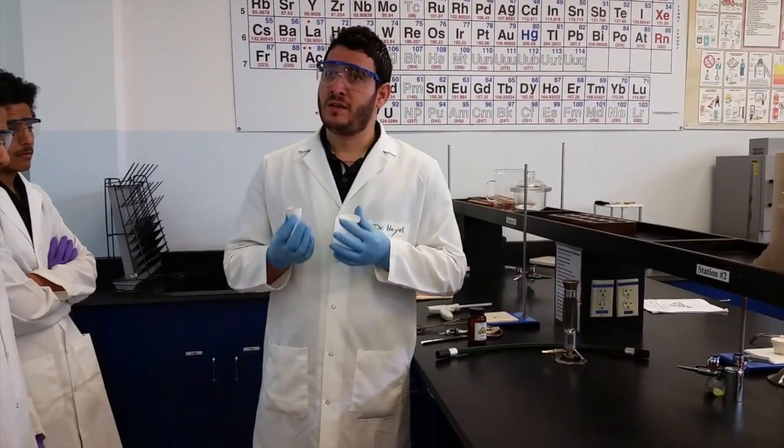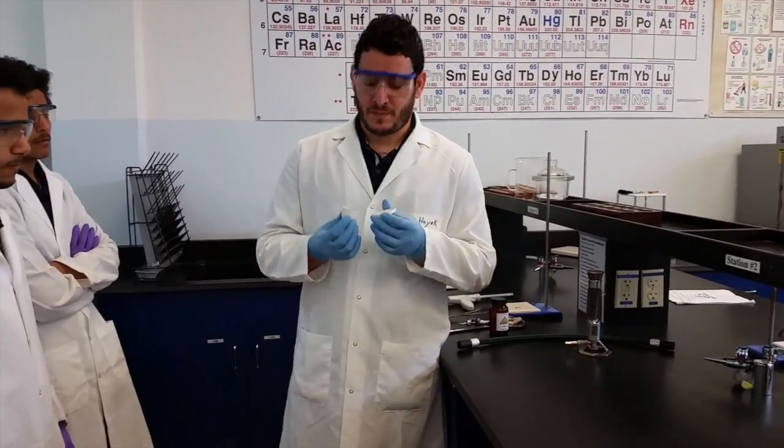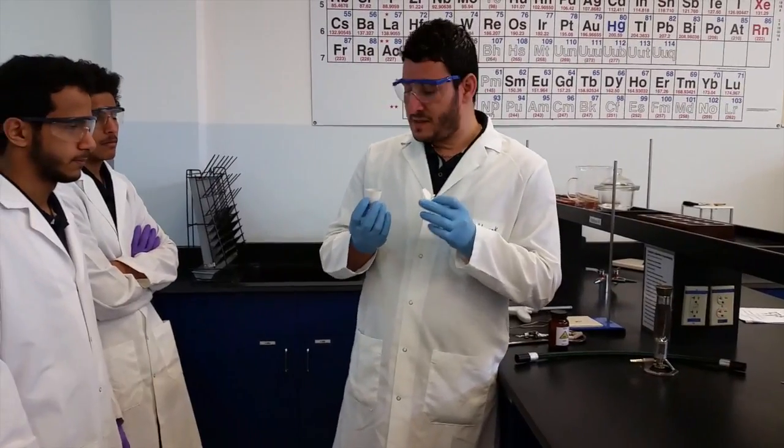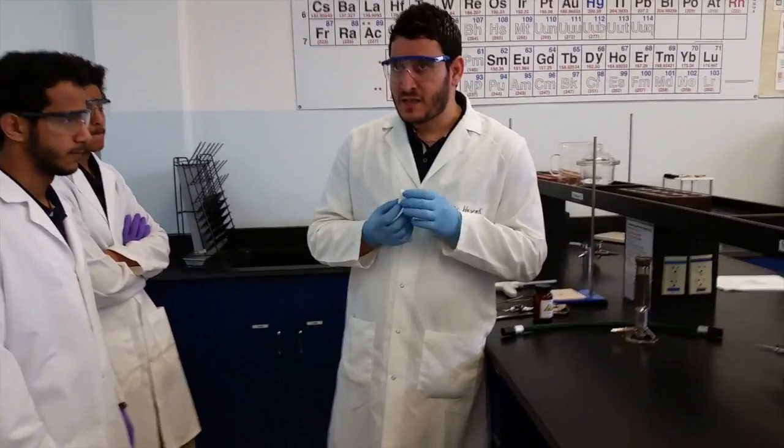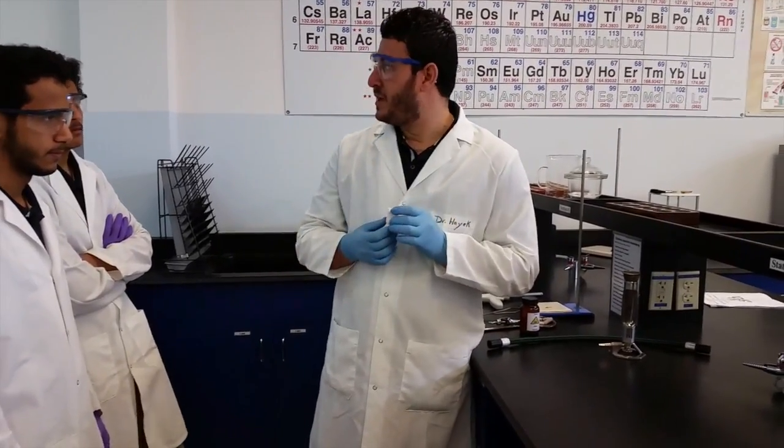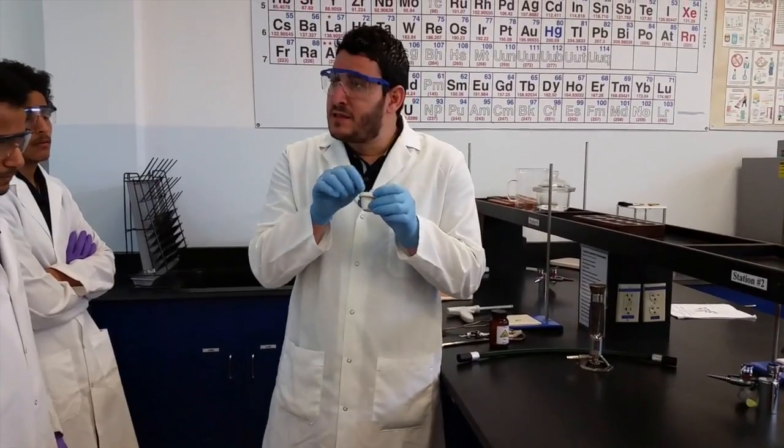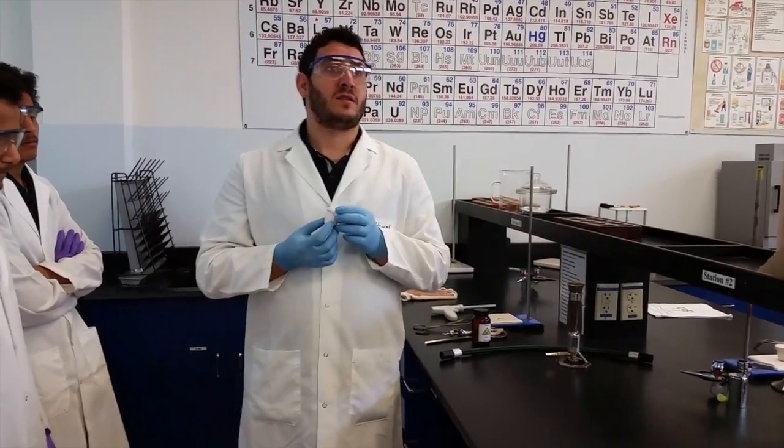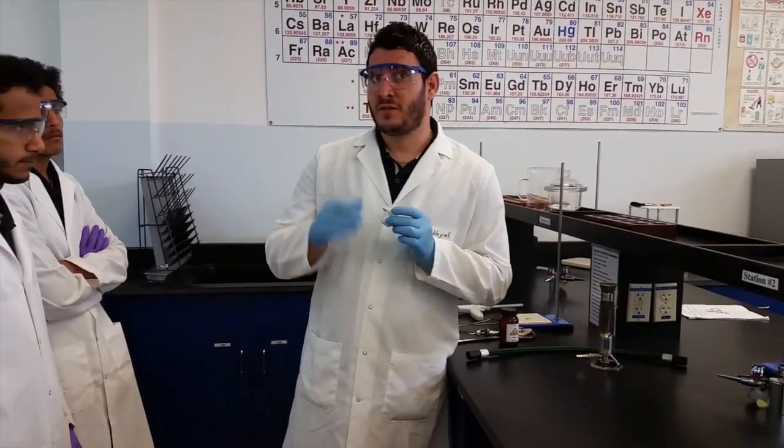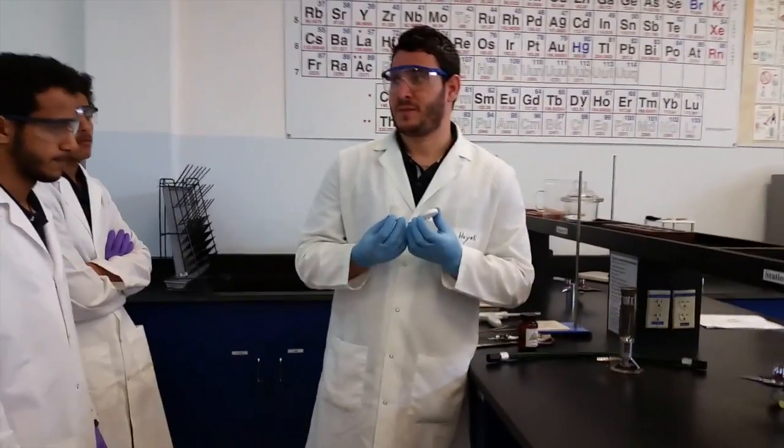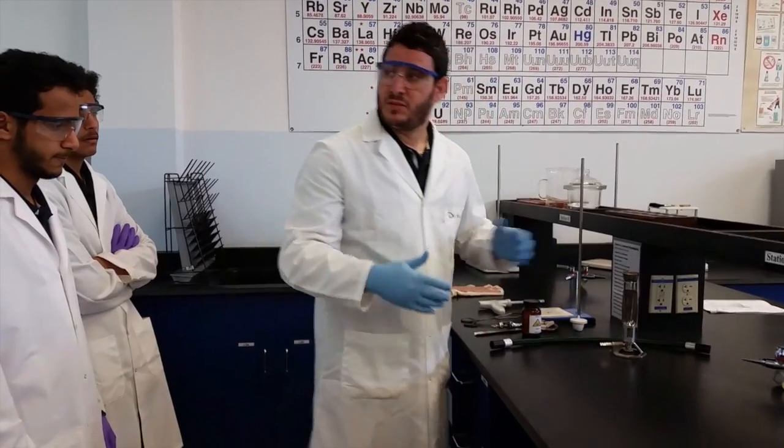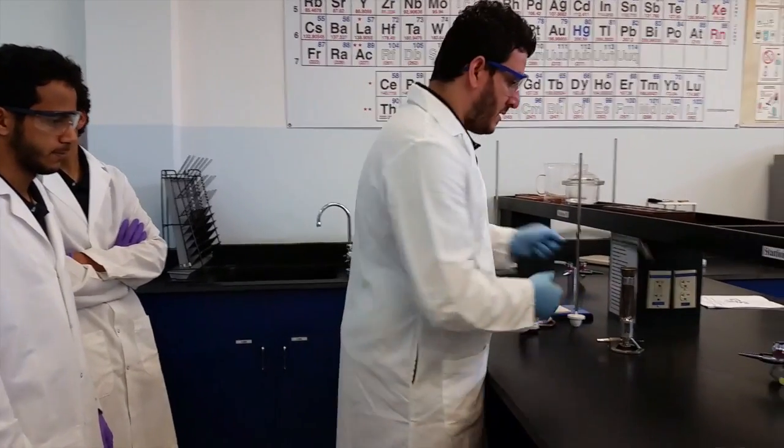The very first thing you need to do is weigh the crucible empty. The crucible is made out of porcelain, which is porous - it has pores. Water vapor from air can come and sit inside. This water might give some error to my experiment, so I need to get rid of it before I weigh the empty crucible. The best way to do this is to heat it up a little bit.